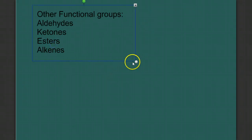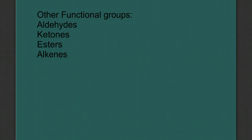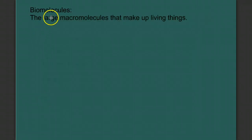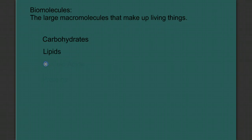Now there are other functional groups, but the ones we've talked about are the ones we're going to focus on: the hydroxyl, the carboxyl, the amine, and the phosphate group. Those are the functional groups, and I think if you could put them in a chart with the formula, structure, and some of the properties, that'd be a good summary. In part two, we're going to look at biomolecules — the large macromolecules that make up living things, like carbohydrates and lipids, nucleic acids, and proteins. Make sure you look for part two coming soon. Thank you.